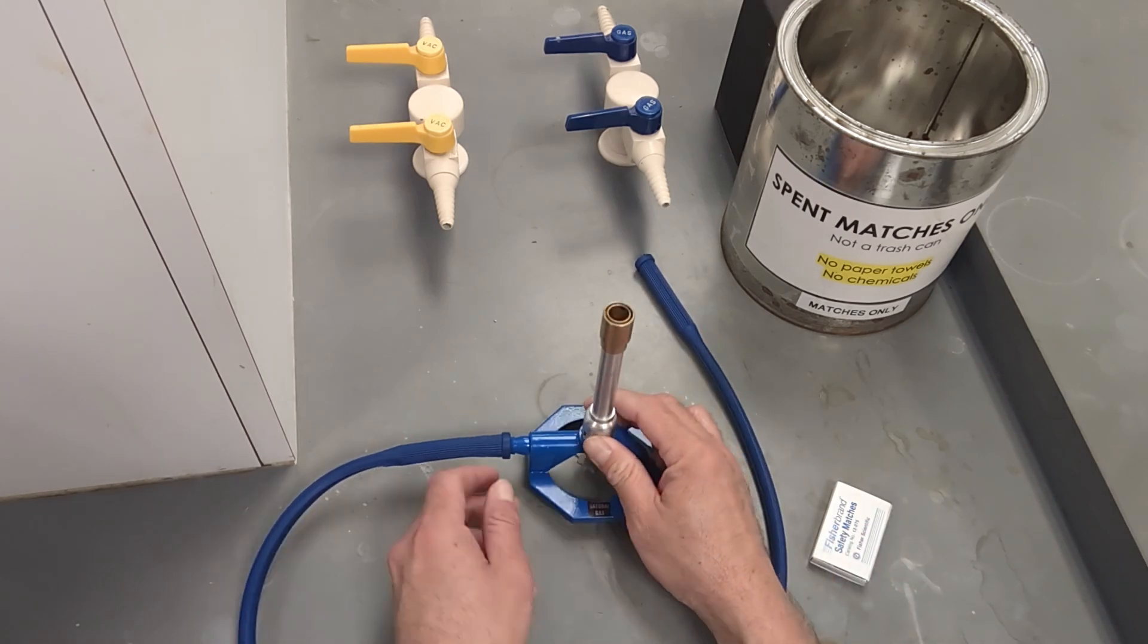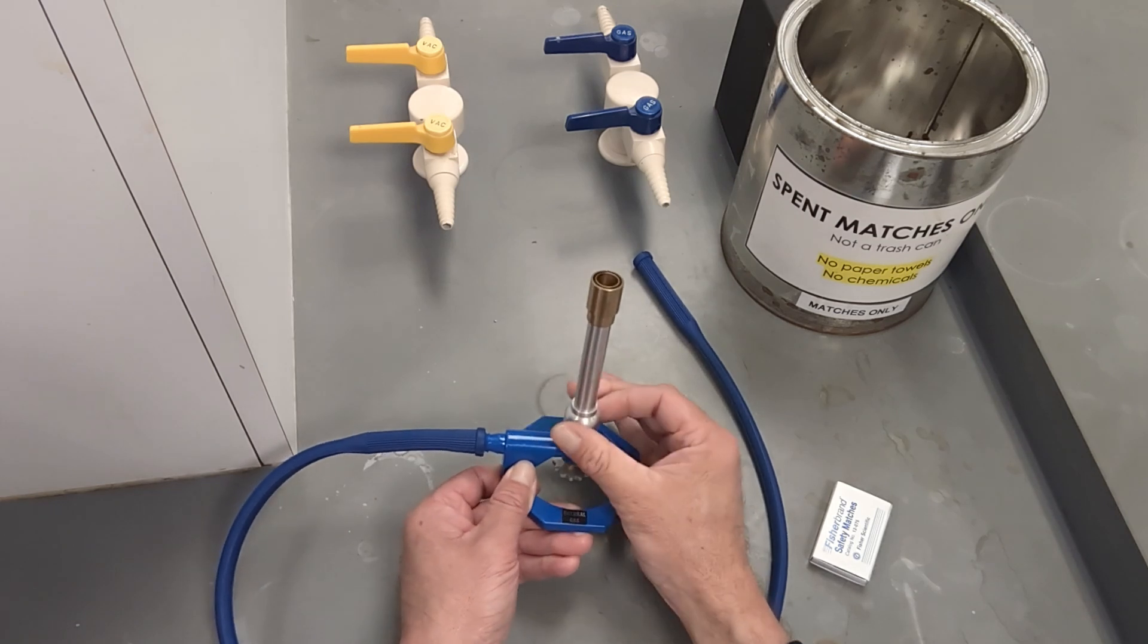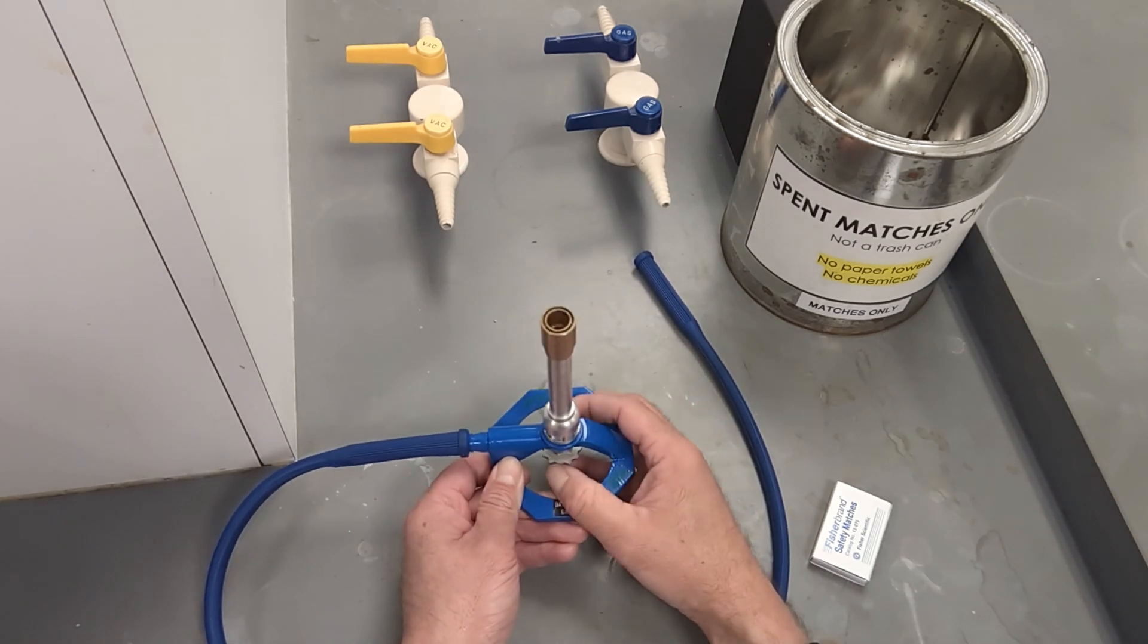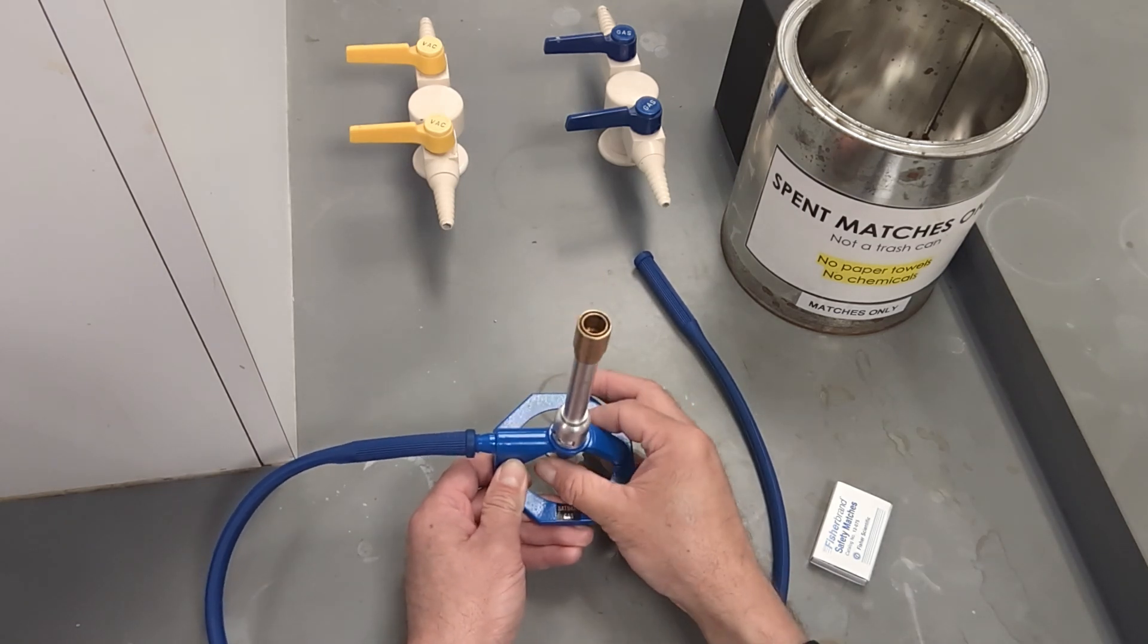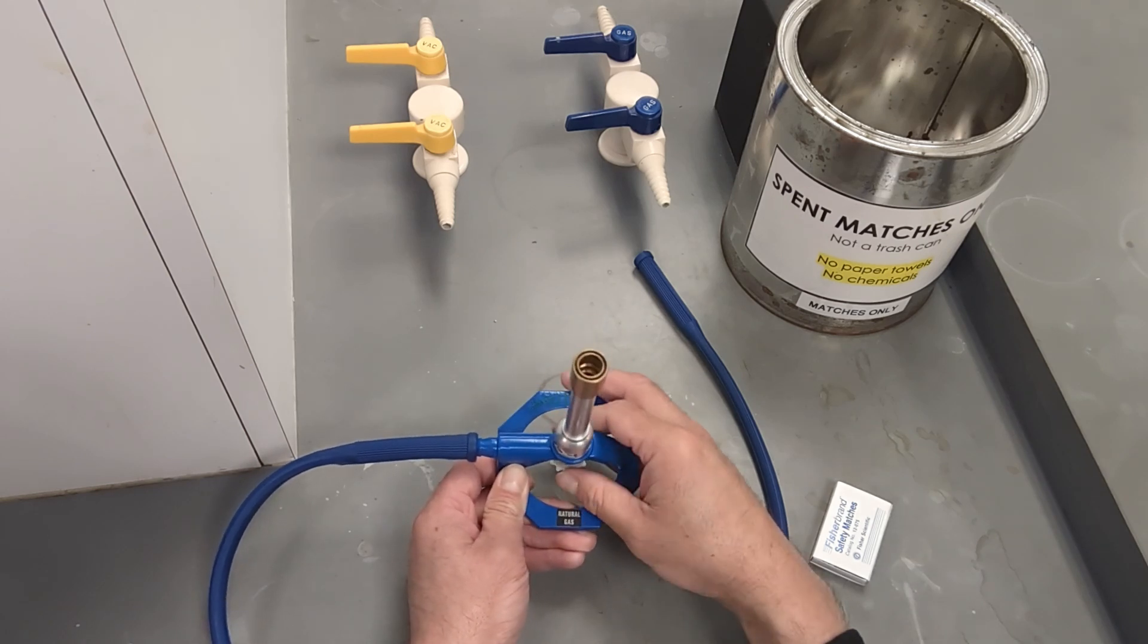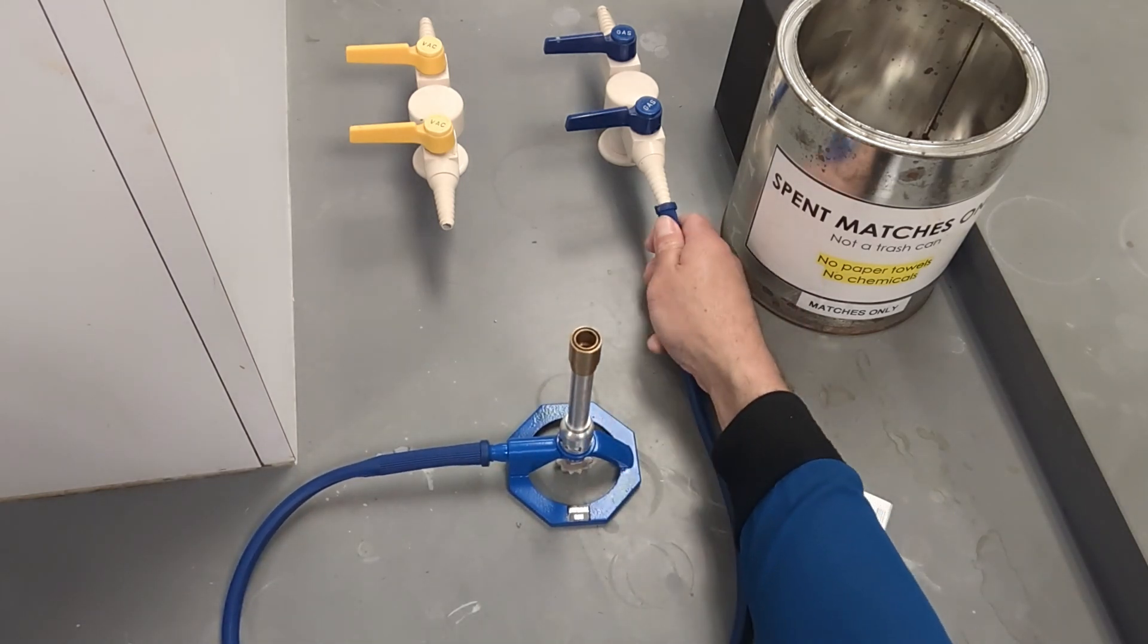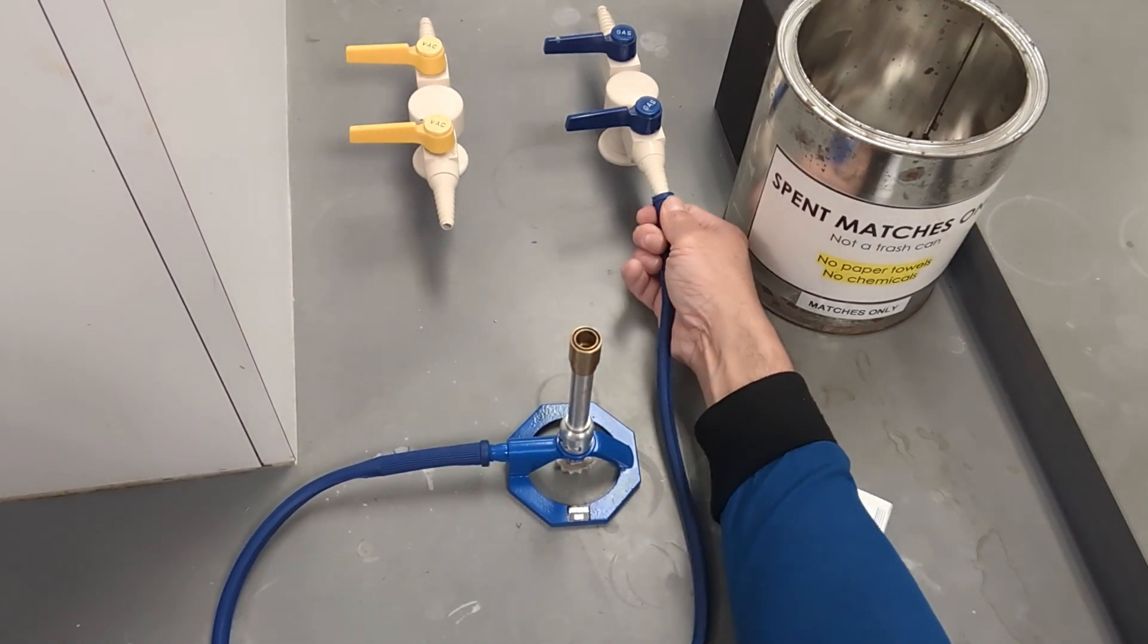So now we are ready to begin. We have our Bunsen burner that we are going to slightly loosen both the collar and stopcock, and we are going to go ahead and attach the hose to our gas line.